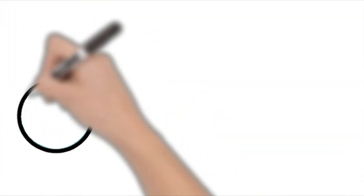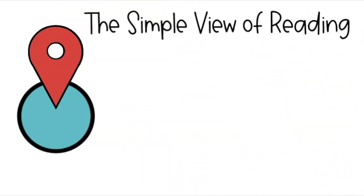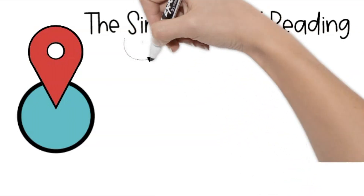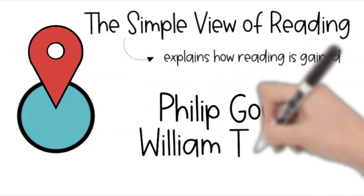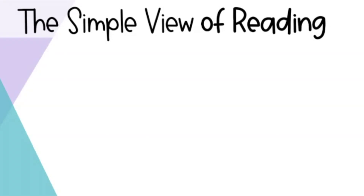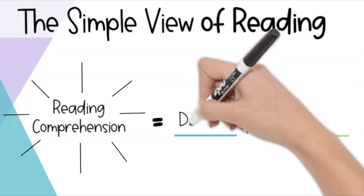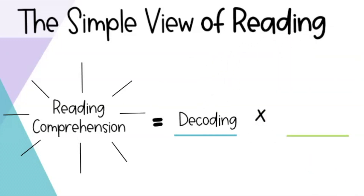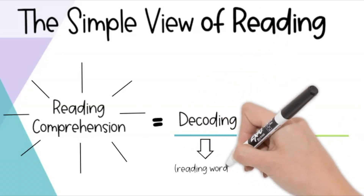We can pinpoint the source of reading problems for these students using the Simple View of Reading. The Simple View of Reading is a simple formula to explain how reading is gained. It was developed by Philip Gough and William Tunmer in the 80s, and it is so simple and full of truth that it still stands strong today. It suggests that the whole purpose of why we read is to gain meaning — reading comprehension is the goal. To get there, we need two things. We need decoding, which is the ability to match letters to sounds and then sounds to words. Basically, decoding is just being able to read the words.